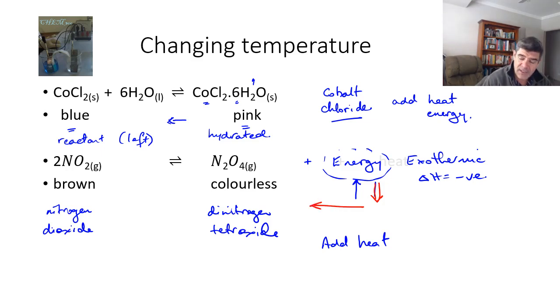If we shift to the left, then we're going to produce more of the dinitrogen tetroxide. And our gas mixture will become slightly browner or darker in colour.